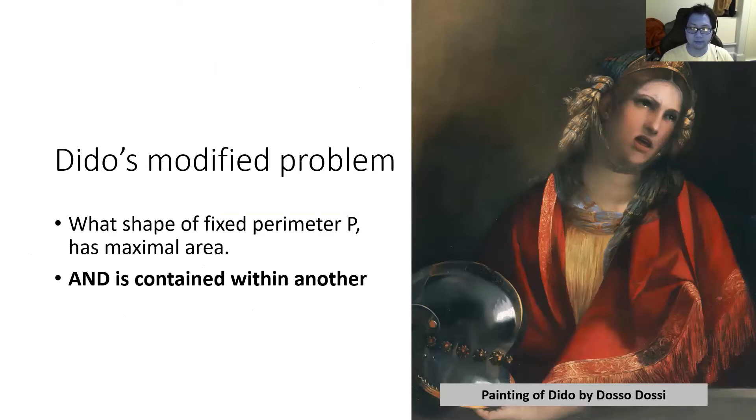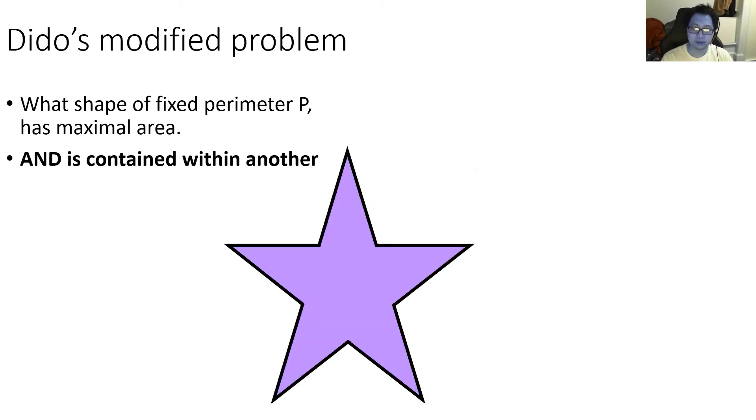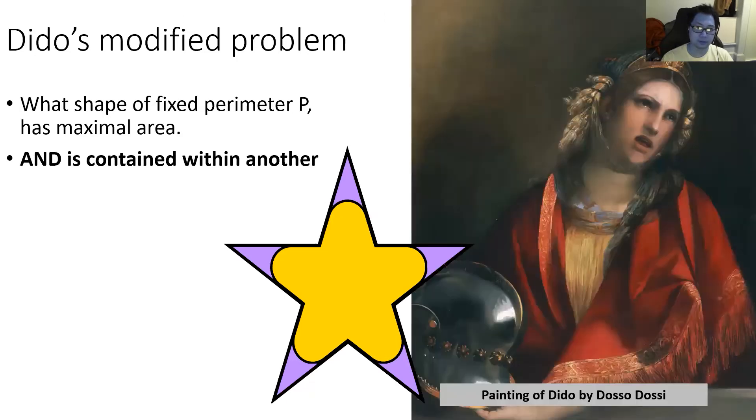Now Dido needs to find a shape of fixed perimeter with maximal area, and that shape must be contained inside some subset. Essentially, you could imagine that King Larbus only owns a limited region of land and cannot give any more than that to Dido. So Dido needs to choose among shapes that are a subset of the purple star. Note that for most fixed perimeter values, the solution is not a perfect circle anymore, because that's an invalid solution. In fact, the right answer in this case is this. However, for general domains, this problem remains difficult to solve today, and so Dido remains perplexed.